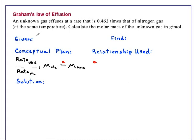We're given a ratio of rates—that is, the rate of the unknown gas relative to the rate of nitrogen is 0.462. We're asked to determine the molar mass of the unknown gas.